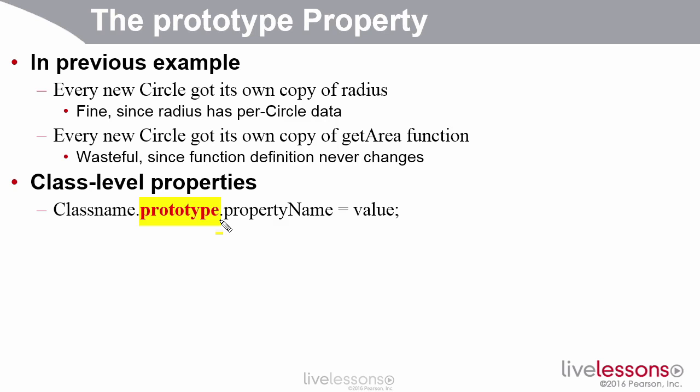If you do this for a regular property, like radius, you get a problem. Now all circles share the same radius. That's probably not good. But if you want something that they all share, usually they all share and it never changes, then you can put it in a class level property by using the prototype name.